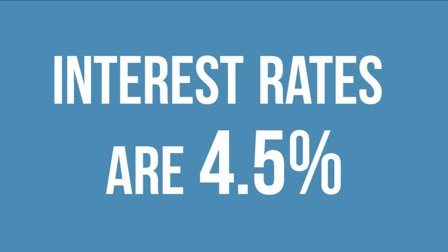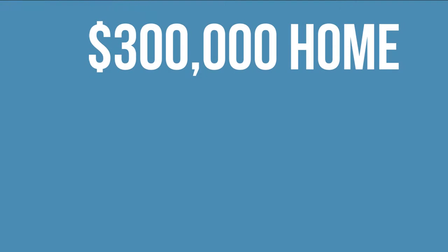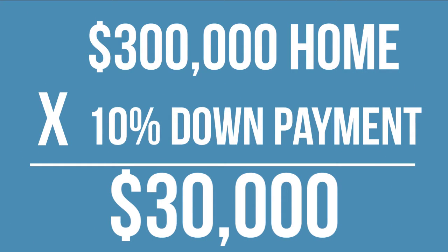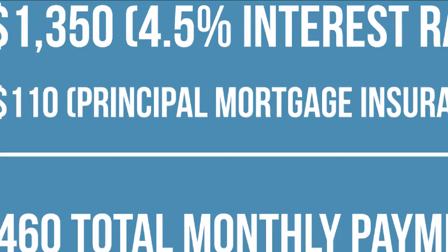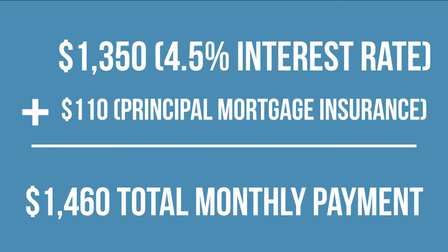So what that means to you is on a $300,000 home, if you had a 10% down payment at a 4.5% interest rate with PMI, which is principal mortgage insurance, your payment would be $1,460.